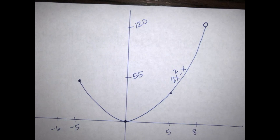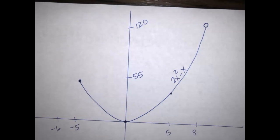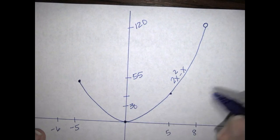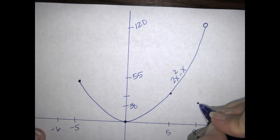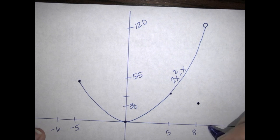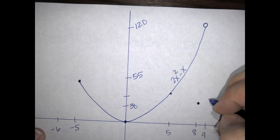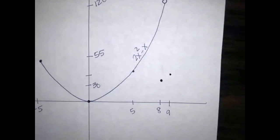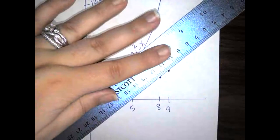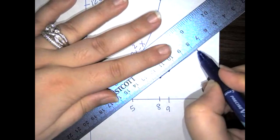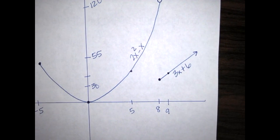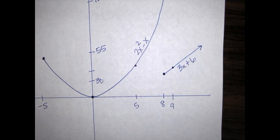For the last piece, 3x plus 6: at x = 8, y = 30 — closed circle — and at x = 9, y = 33. I connect and extend in the positive direction. I label it '3x plus 6.' All three pieces together form the complete piecewise graph.